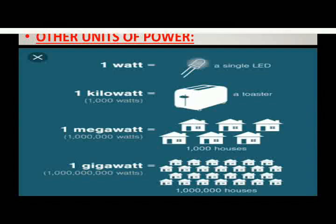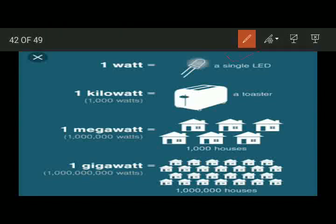Here is one more example. A single LED has a power of 1 watt, meaning it consumes 1 joule of electrical energy in 1 second. Similarly, a toaster has a power of 1 kilowatt, meaning 1000 watts of energy is consumed in 1 second. The power needed to light up 1000 houses is 1 megawatt, that is 10 to the power 6 watts. A power of 1 gigawatt will light up 10 lakh or 1 million houses.